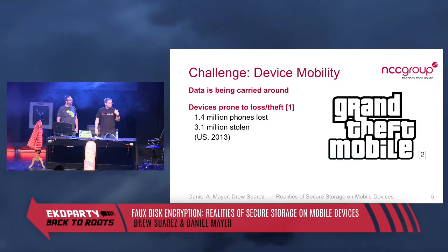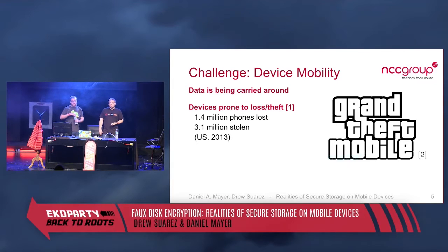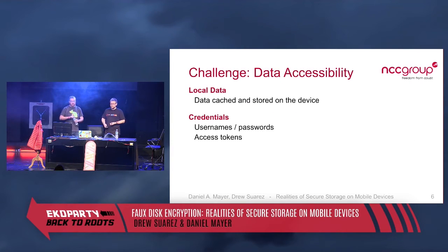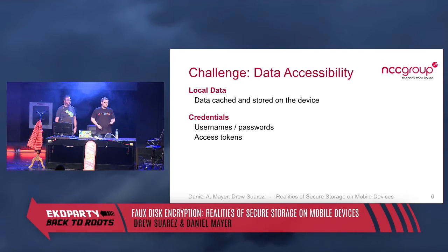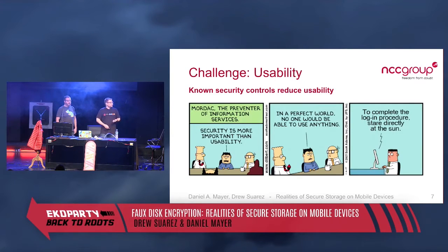So why is that a problem? There are a lot of phones lost or stolen each year. If you have data on the device and carry it around everywhere, it's much easier to lose it. But we can't stop putting things on our phones — we love them, we use the internet, and we have data that either has to be stored on the device or at least cached there, plus credentials and access tokens. The challenge is making that work with usability.